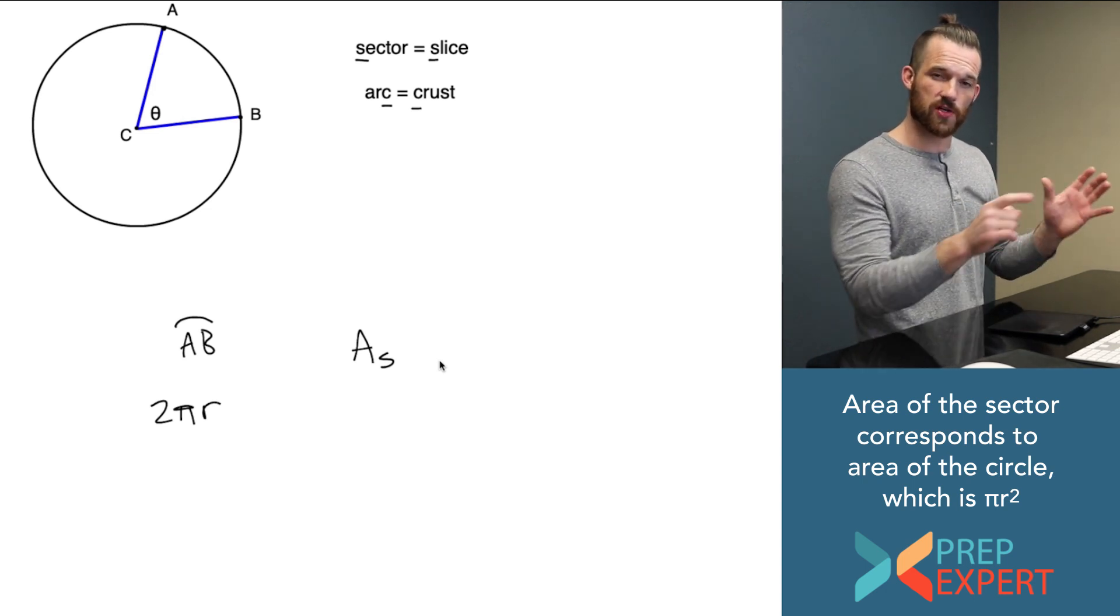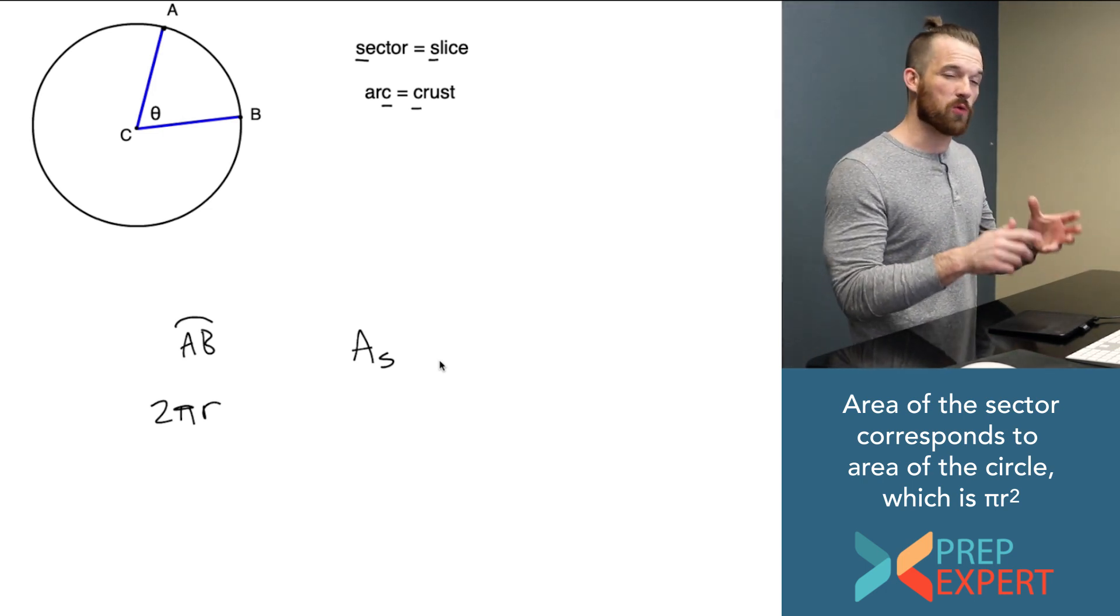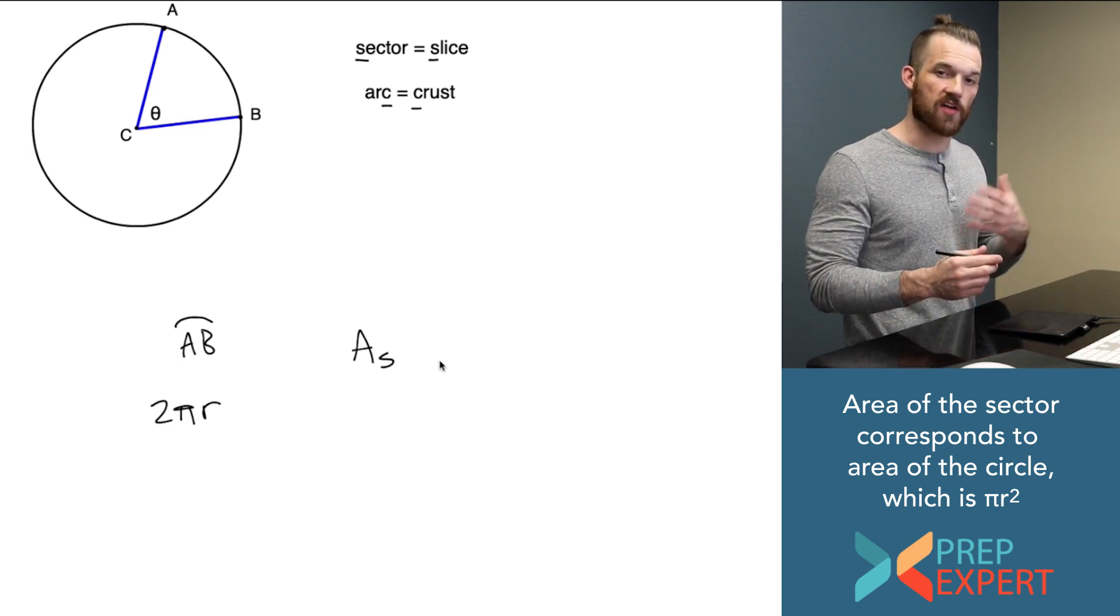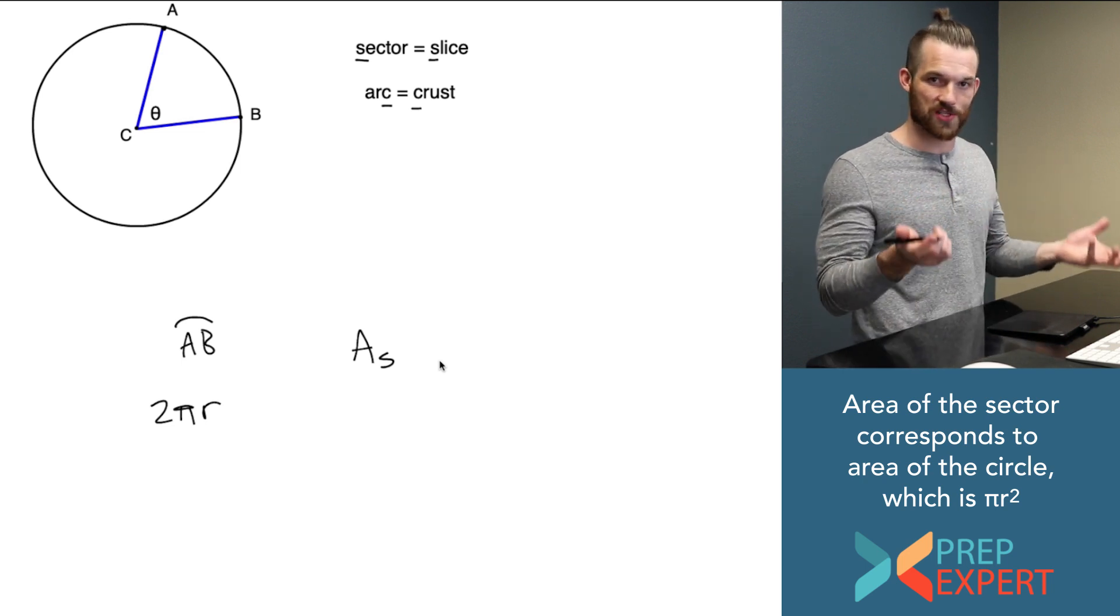If I were to expand the sector until it incorporated the whole circle, what would the area of the sector have become? It would have become the area of the circle as a whole.